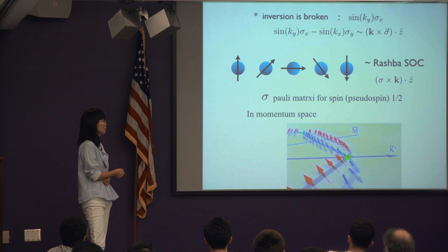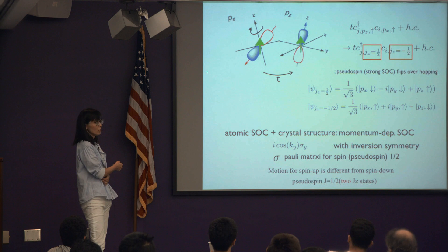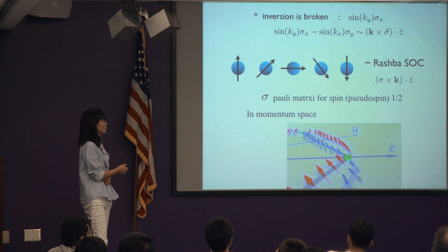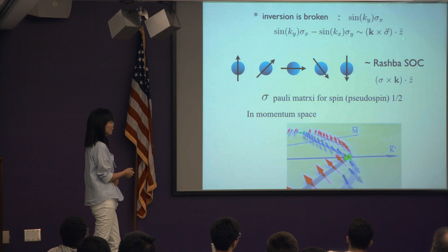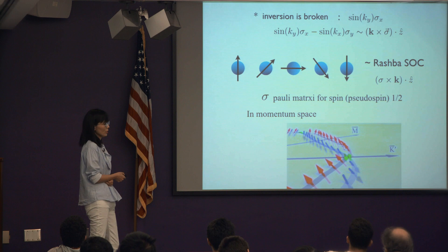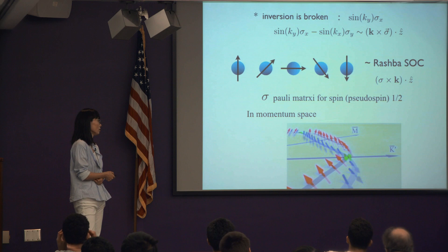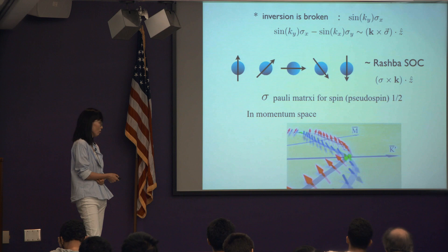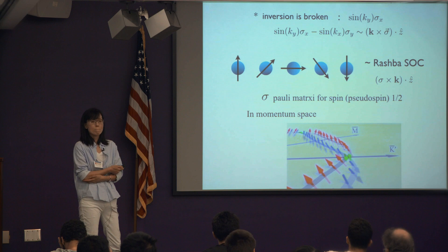Expanding in small k gives k cross sigma · z-hat in two dimensions, which is nothing but Rashba spin-orbit coupling. That's how you generate Rashba spin-orbit coupling, and this is what is used in semiconductors with heavy elements like bismuth and telluride when dealing with p-orbitals with strong spin-orbit coupling.